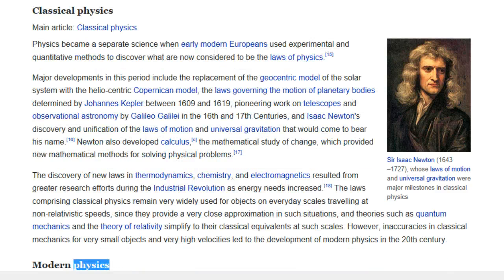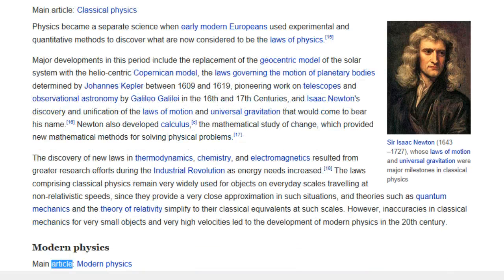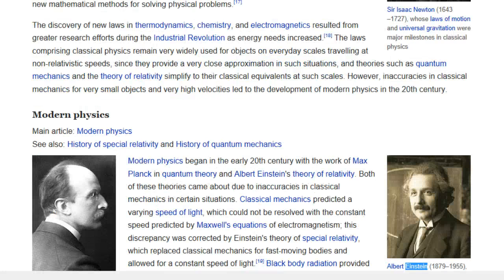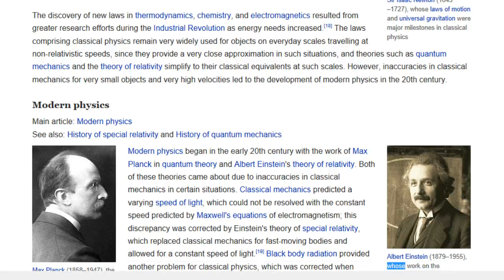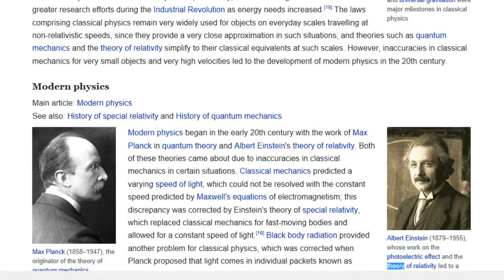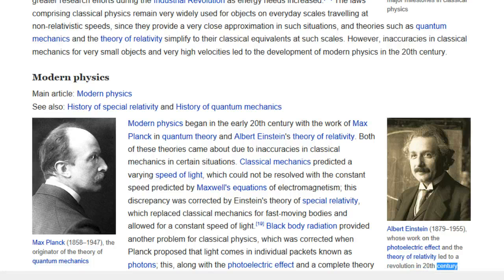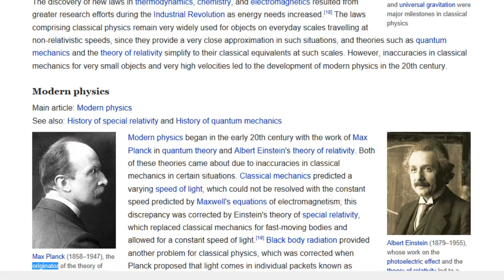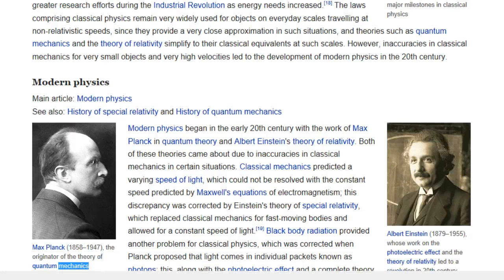Modern Physics. Main article, Modern Physics. See also, History of Special Relativity and History of Quantum Mechanics. Albert Einstein, 1879-1955, whose work on the photoelectric effect and the theory of relativity led to a revolution in 20th century physics. Max Planck, 1858-1947, the originator of the theory of quantum mechanics.